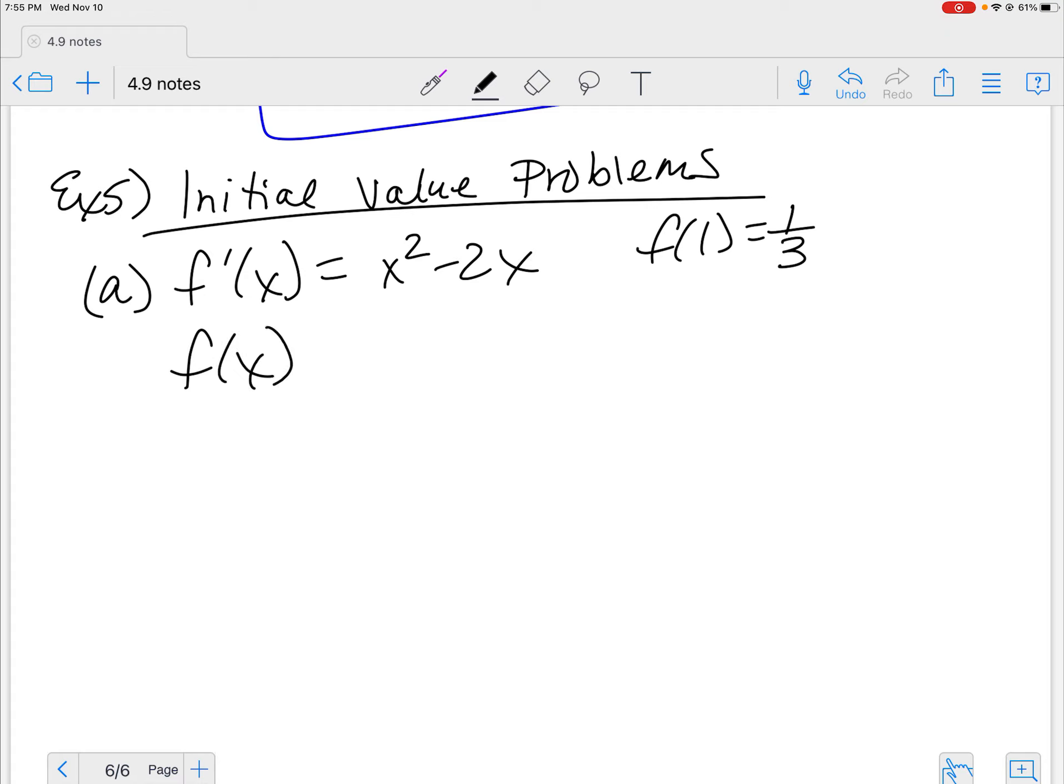So we have to do an anti-derivative to get back to the original function. So f of x going back to that original function, and then we're going to do the same thing. Add 1 to this.